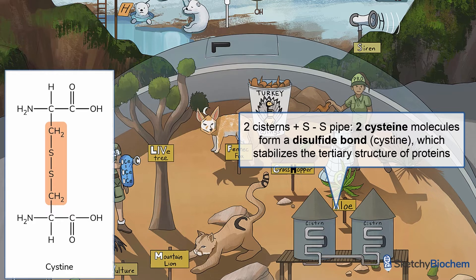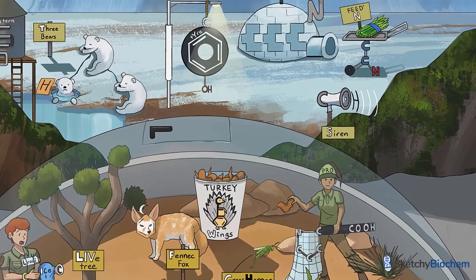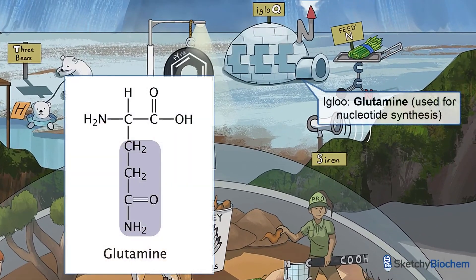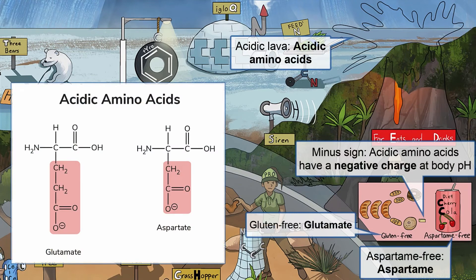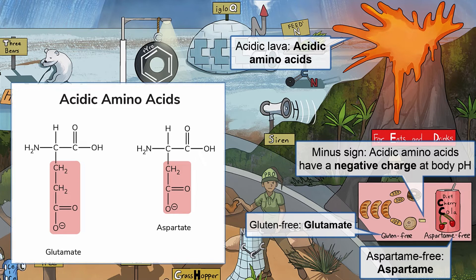Disulfide bridges play a vital role in stabilizing tertiary protein structures. Finally, this igloo represents glutamine. Glutamine is needed to make purine and pyrimidine nucleotides. Let's turn our attention to the gluten-free pastries and the aspartame-free Diet Cherry Cola at the Volcano snack stand. These represent the acidic amino acids glutamate and aspartate.